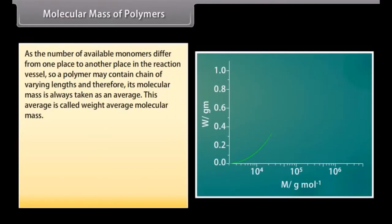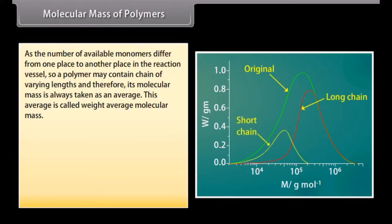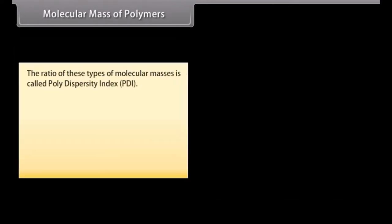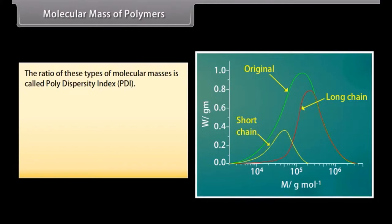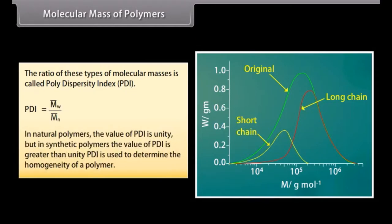During the formation of polymers, the growth of polymer chains depends upon the number of monomers available in the vicinity. As the number of available monomers differs from place to place in the reaction vessel, a polymer may contain chains of varying lengths and therefore its molecular mass is always taken as an average — called the weight average molecular mass. The ratio of these types of molecular masses is called the polydispersity index (PDI). In natural polymers the PDI is unity; in synthetic polymers it is greater than unity. PDI is used to determine the homogeneity of a polymer.